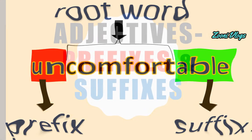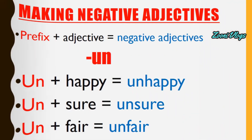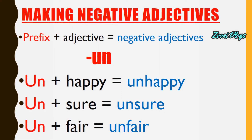Making negative adjectives: prefix plus adjective equals negative adjective. That means, usually when you add a prefix to an adjective, you can get a negative adjective. This is a common pattern — we can get negative adjectives with prefixes.